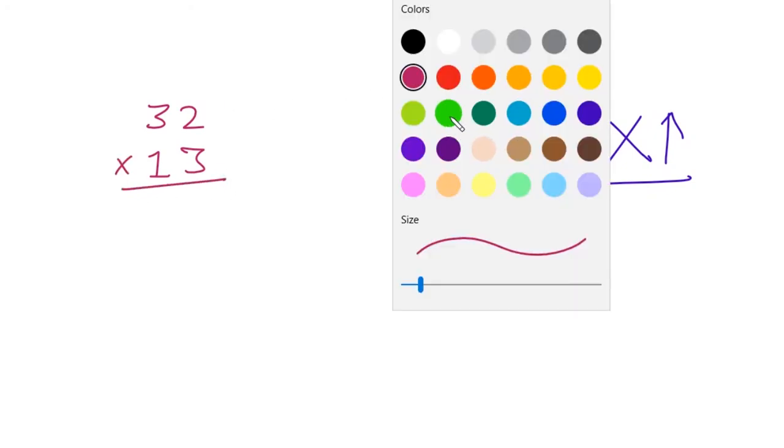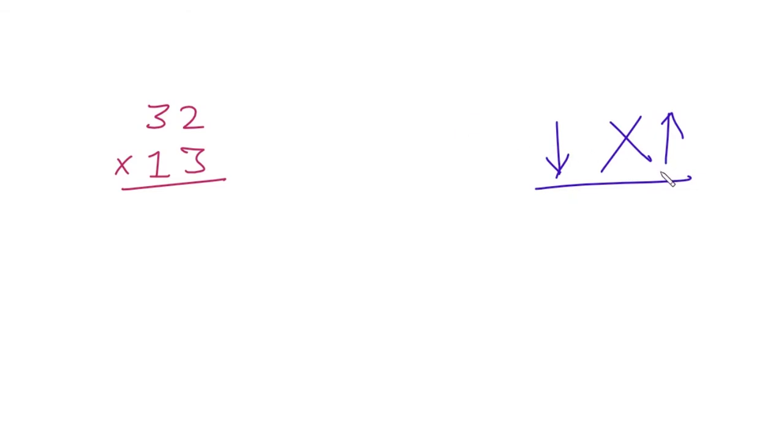So how this works is that this up arrow simply means that you have to multiply this number by this number. Then this cross sign means that we have to multiply this number by this, then this number by this. Then this down arrow simply means you have to multiply this number by this number.